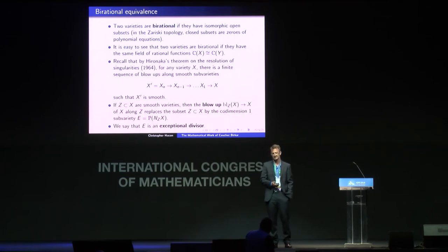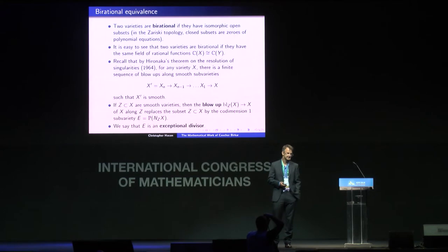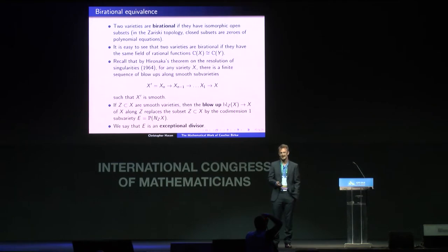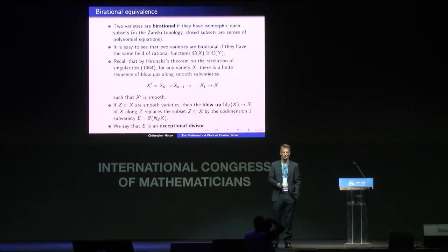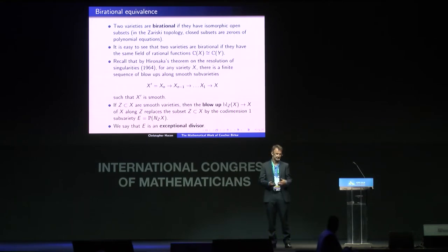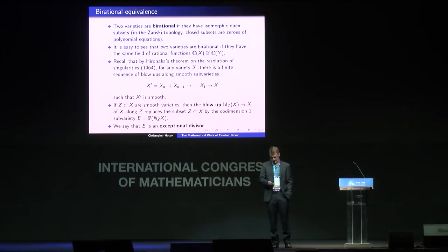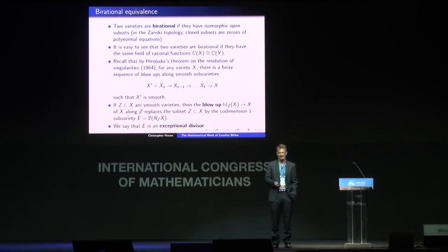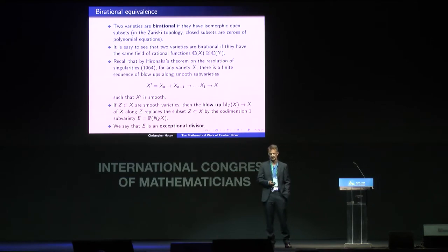Two varieties are said to be birational if they have isomorphic open subsets. This is in the Zariski topology, not the analytic topology, so open subsets are just complements of zero sets of other polynomial equations, and so two birational varieties are isomorphic outside of a subset of measure zero. It's easy to see that two varieties are birational if and only if they have the same field of rational functions, or meromorphic functions, if you prefer.